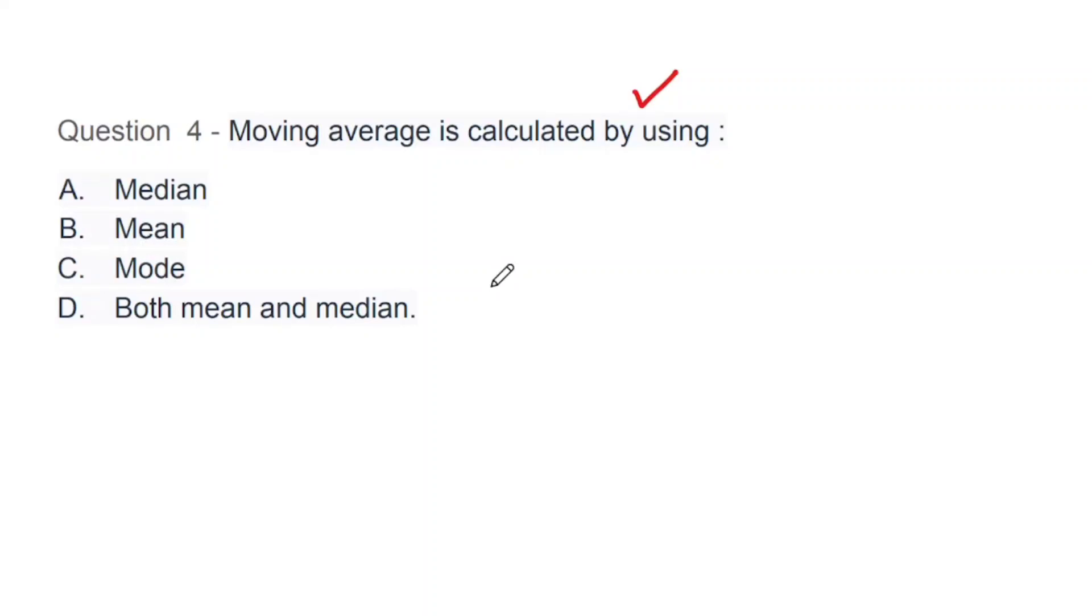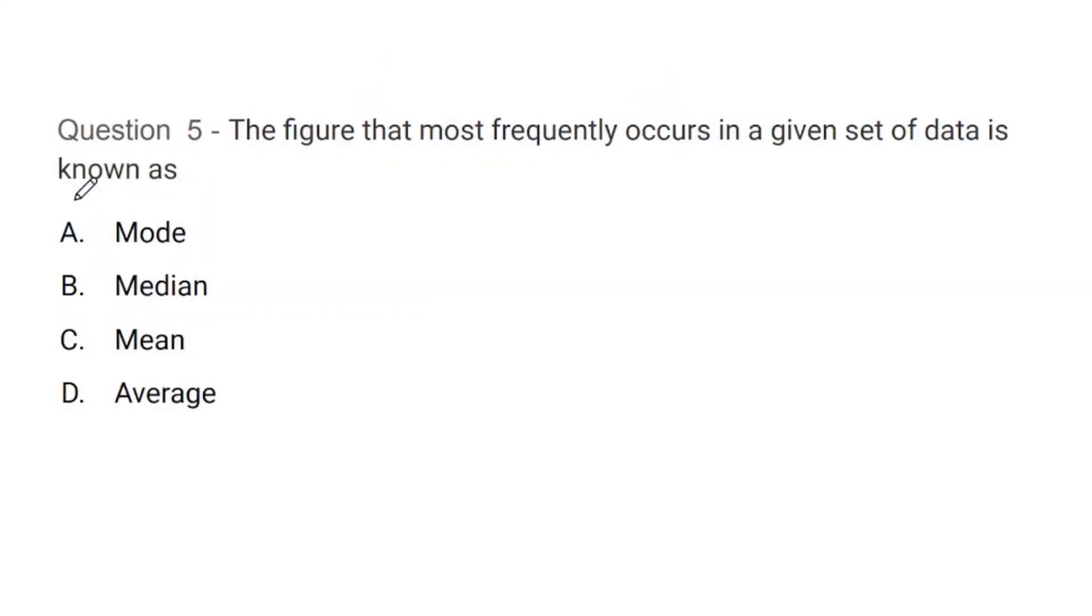Question number 4: Moving average is calculated by using what - median, mean, mode, or mean or median both? The correct answer is B, that is mean.